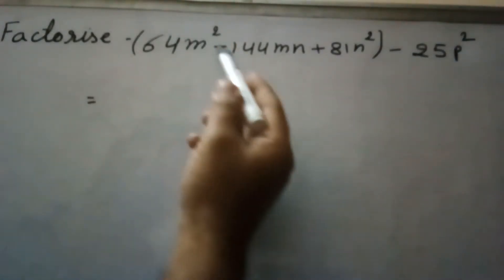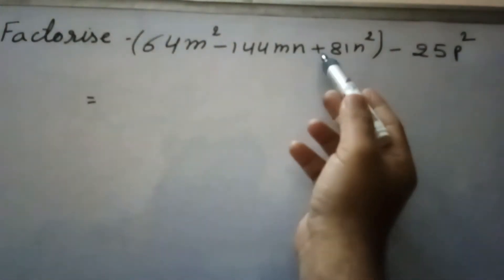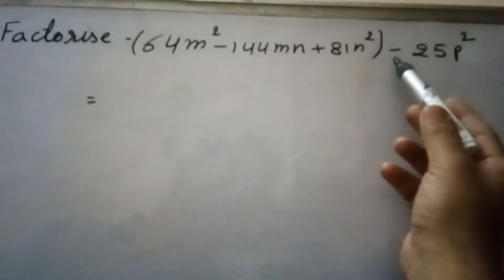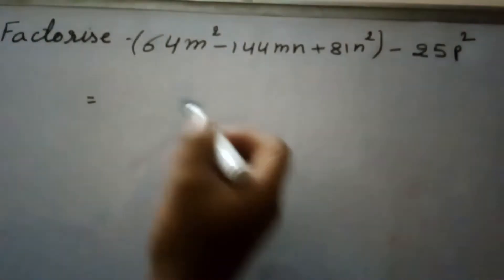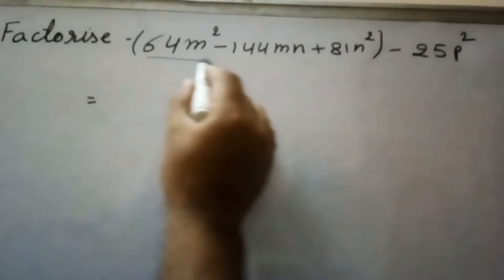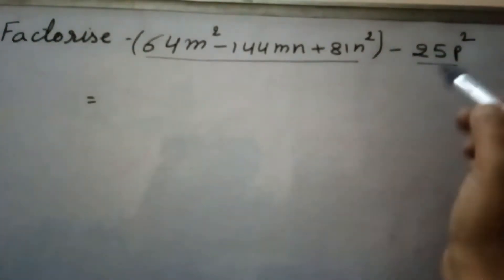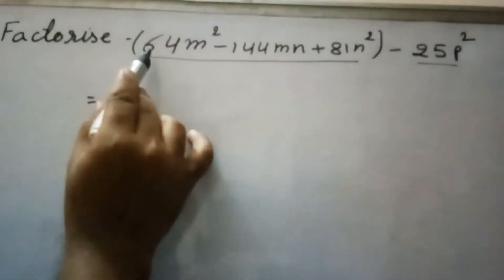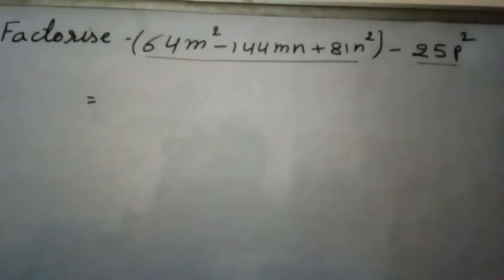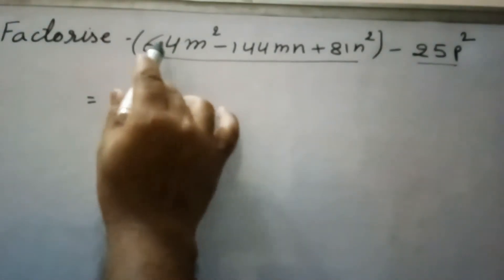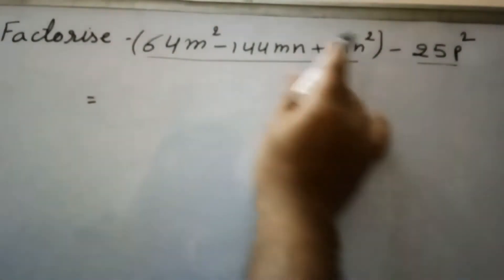So this question is factorize 64m² - 144mn + 81n² - 25p². If you see here, these are three terms and this is a single term, and this is a perfect square. 25 is the square of 5, p² is the square of p. Here also the first term and third term are perfect squares, so we will use one identity first. We will use the identity here in this first bracket.